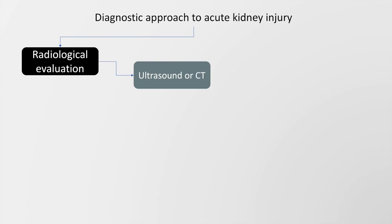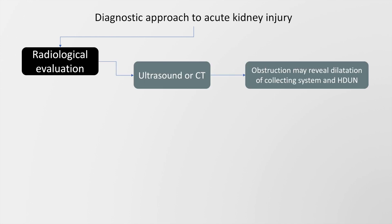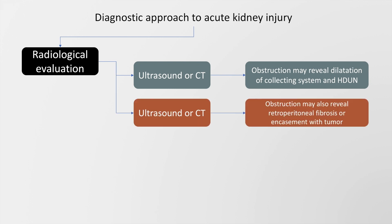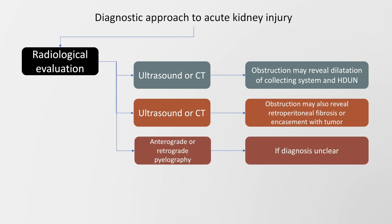Imaging in acute kidney injury may also provide clues to diagnosis. An ultrasound or CT may detect obstruction and may present with dilatation of the collecting system along with hydroureteronephrosis. Ultrasound or CT may also show retroperitoneal fibrosis or encasement with a tumor. Anterograde or retrograde pyelography may be used if the diagnosis is not clear.